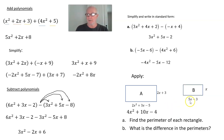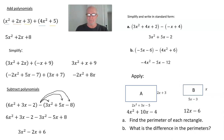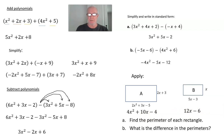For rectangle B: (5x − 3) + (5x − 3) + x + x, so the perimeter of rectangle B is 12x − 6. Now pause the presentation, find the difference between those two perimeters, and then resume. Taking (4x² + 10x − 4) − (12x − 6), the difference is 4x² − 2x + 2.